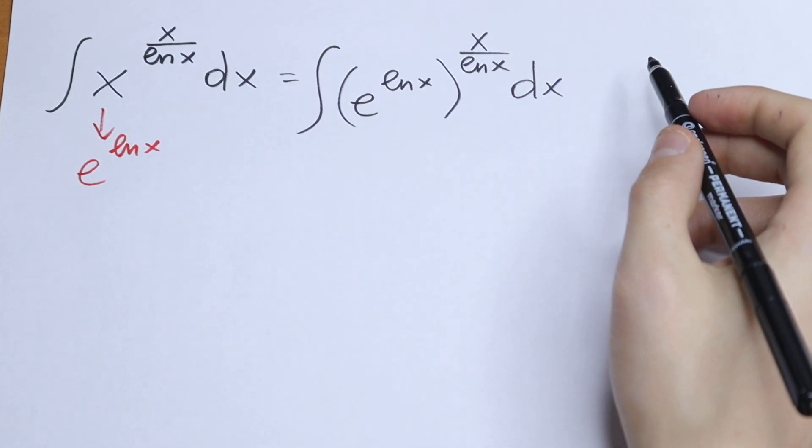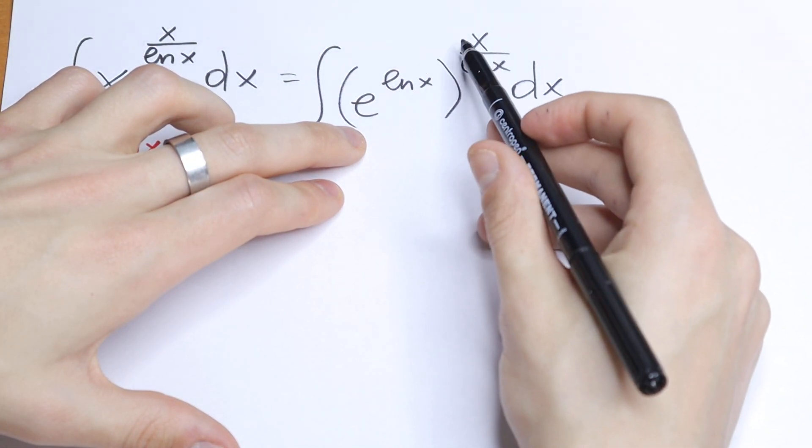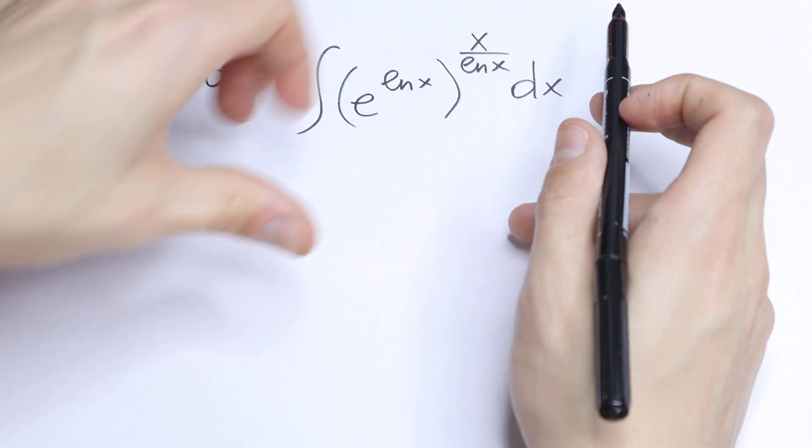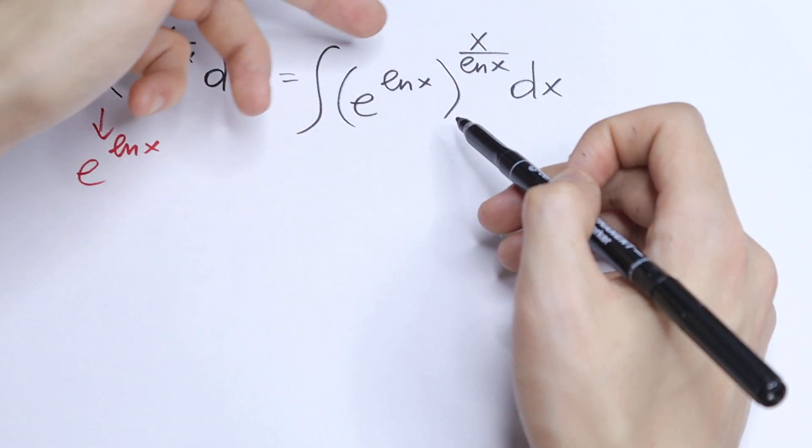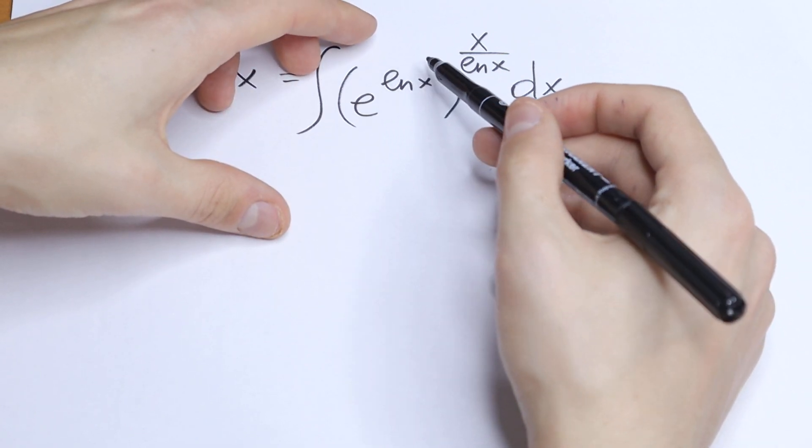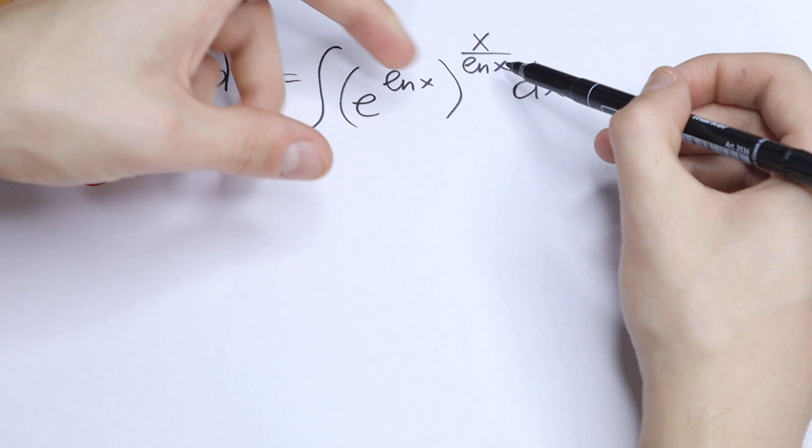And take a look, if we have a situation like that, if we raise these parentheses to the power, we need to multiply this power and this power. If we multiply them, we cancel this natural log x because we have this x in our numerator and this x in our denominator.